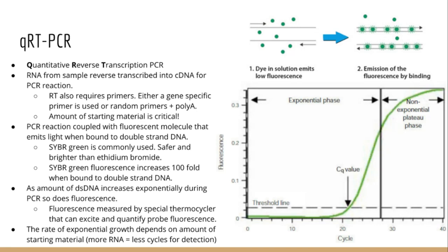qRT-PCR stands for quantitative reverse transcription polymerase chain reaction, and it can be used to quantify the relative amounts of RNA based on the rate of amplification. This technique is used to analyze relative gene expression between two or more conditions.